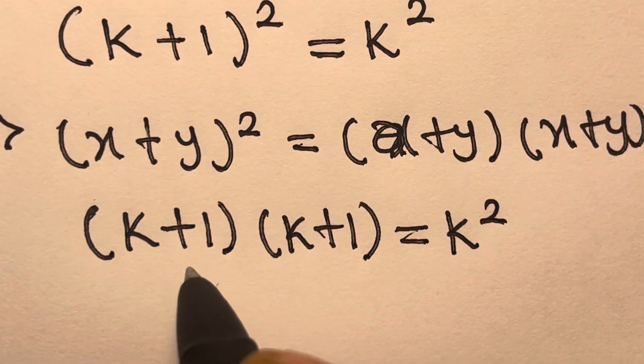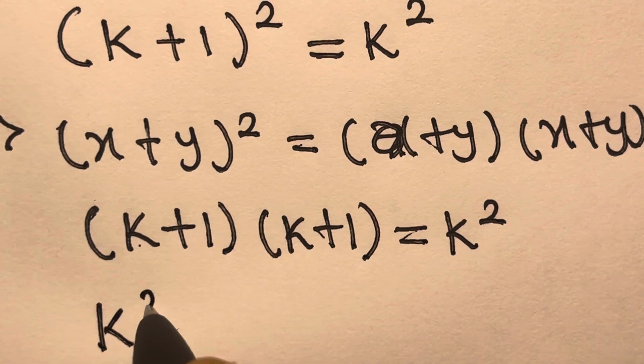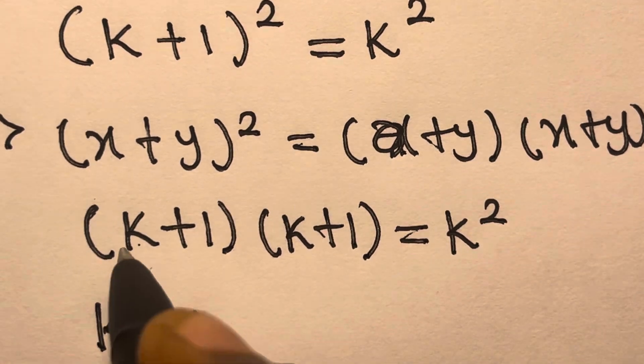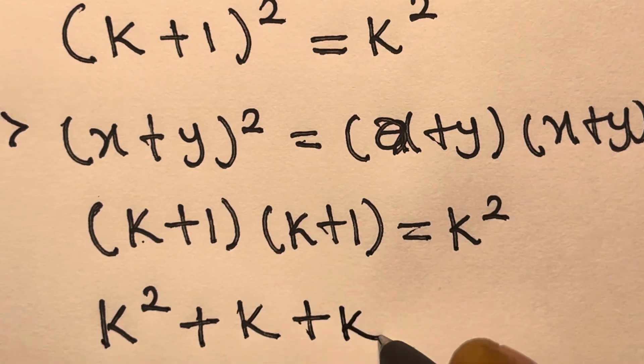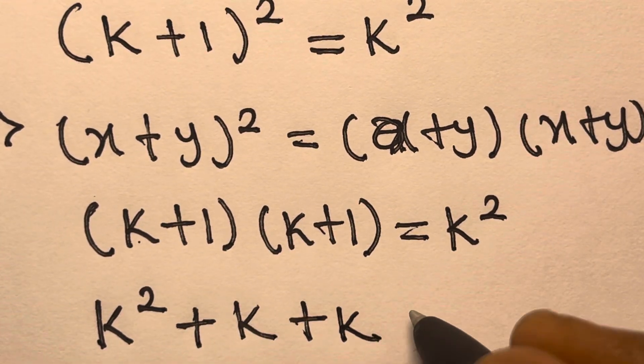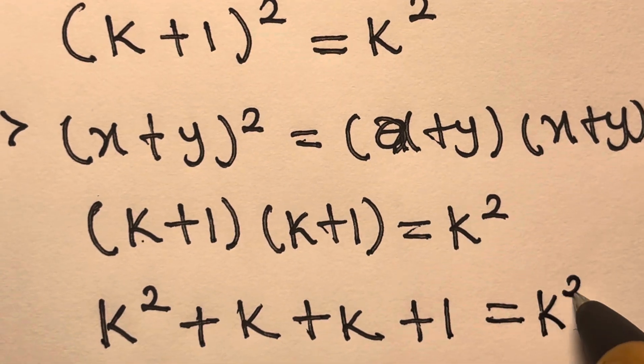So now let's expand this. k times k, we have k square. Plus k times 1, we have k. Plus 1 times k, we have k. Plus 1 times 1, we have 1. Right? Equals k square.